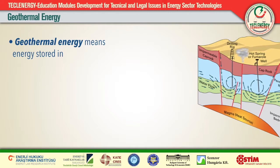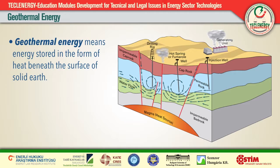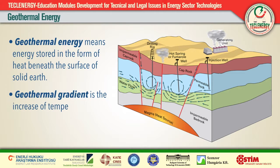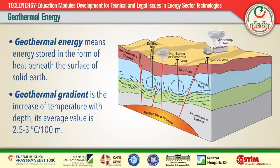Geothermal energy means energy stored in the form of heat beneath the surface of solid Earth. In other terms, geothermal energy is the part of Earth's heat that can or could be recovered and exploited. The increase of temperature with depth is called the geothermal gradient; its average value is about 2.5 to 3 degrees Celsius per 100 meters.